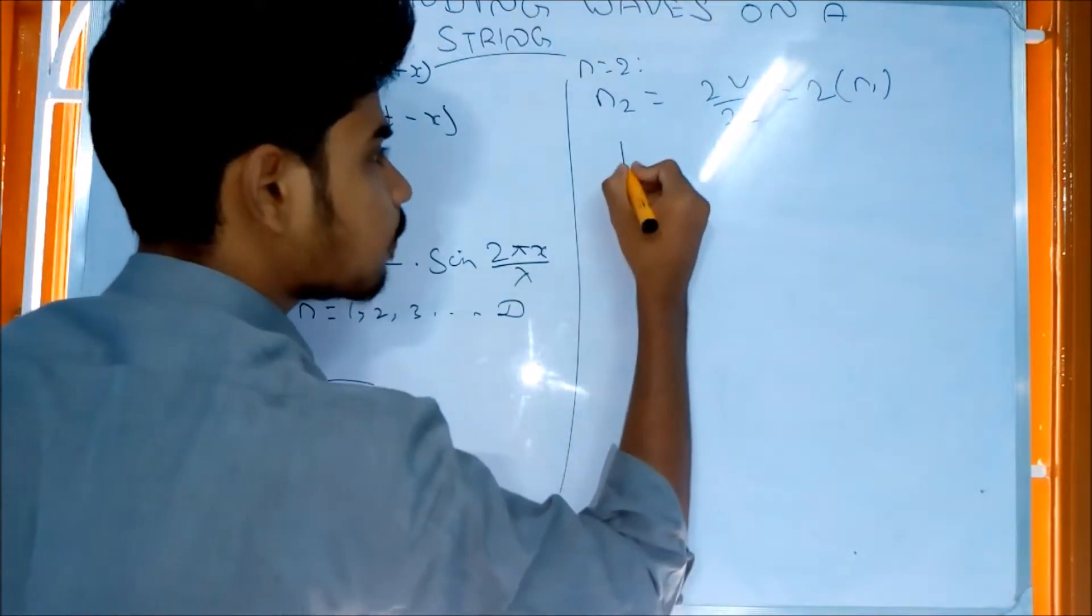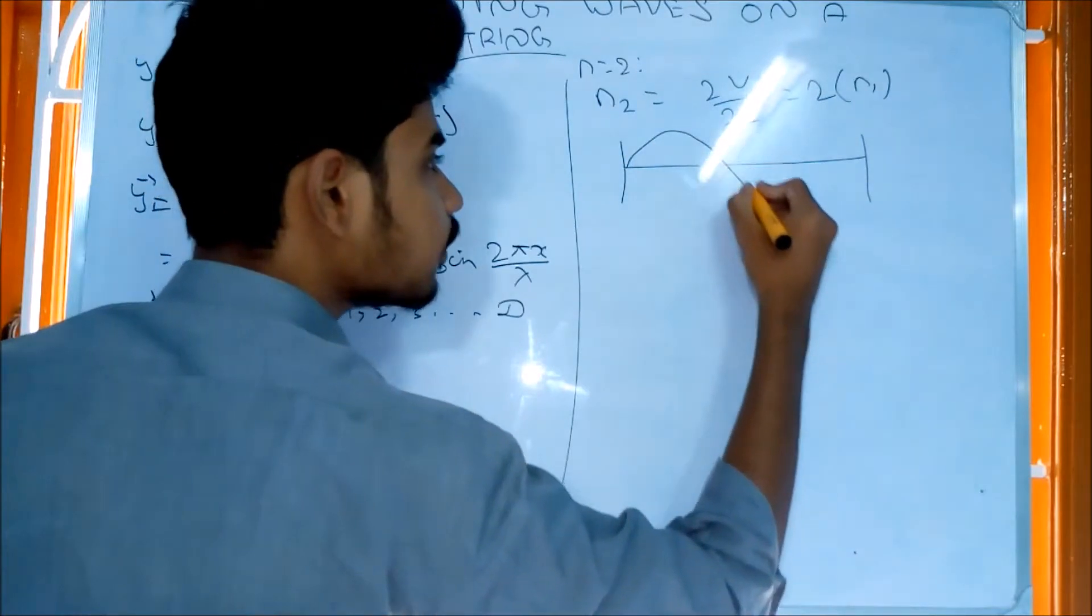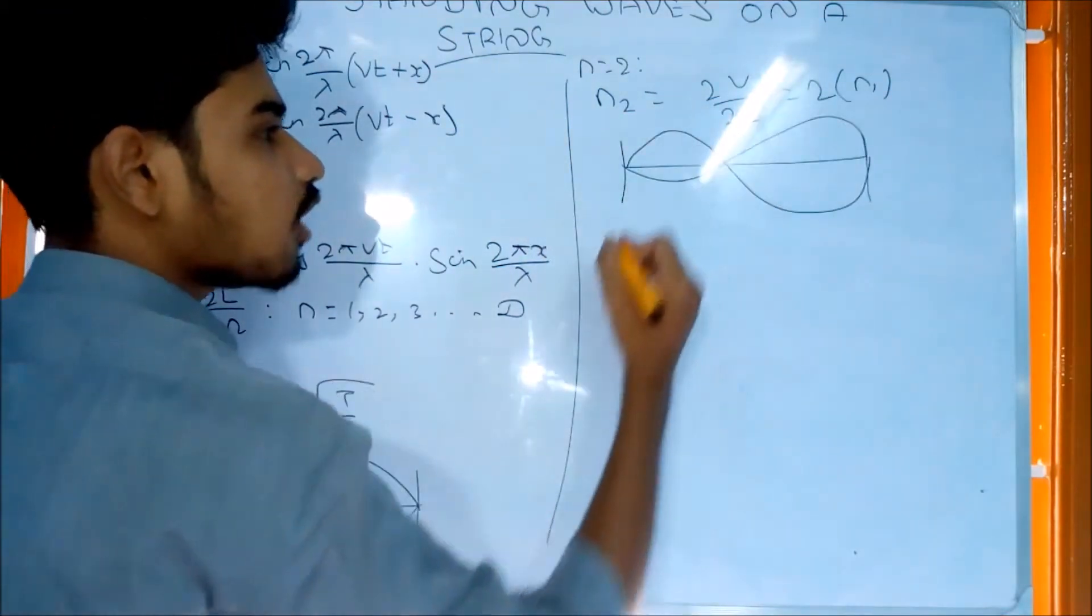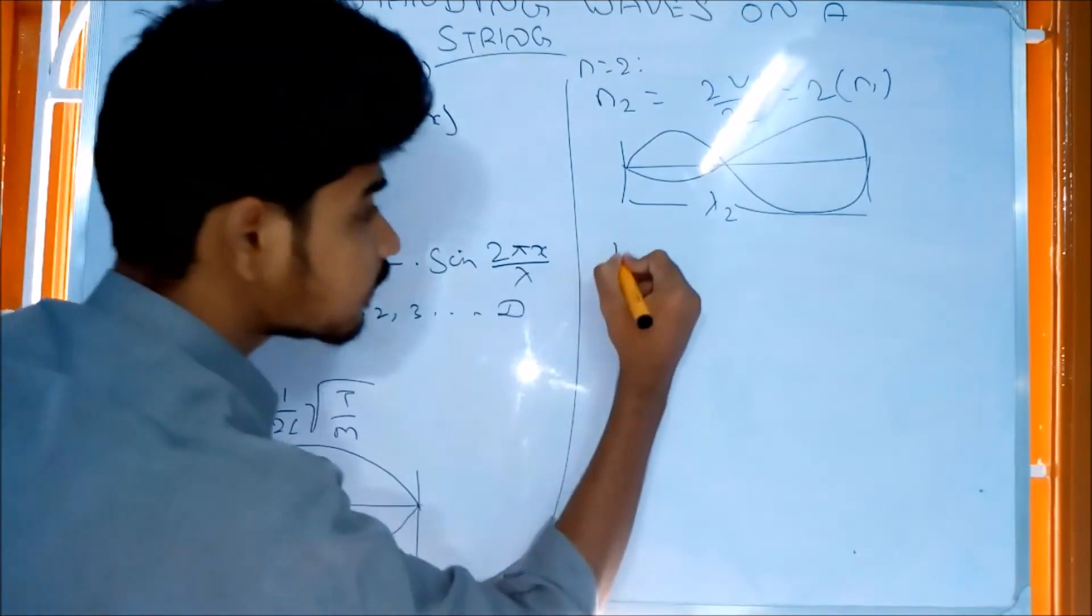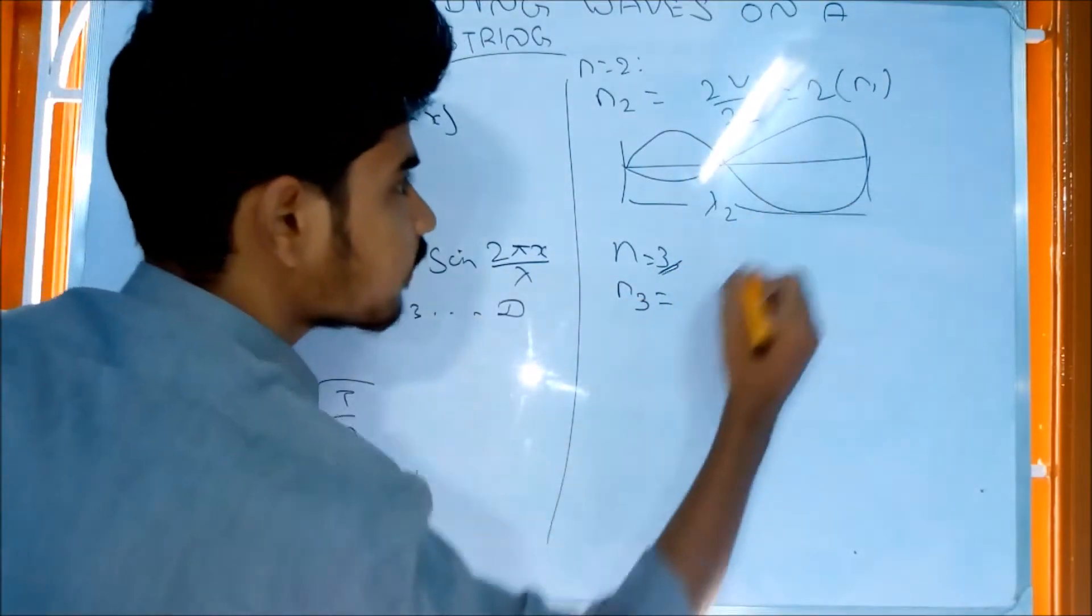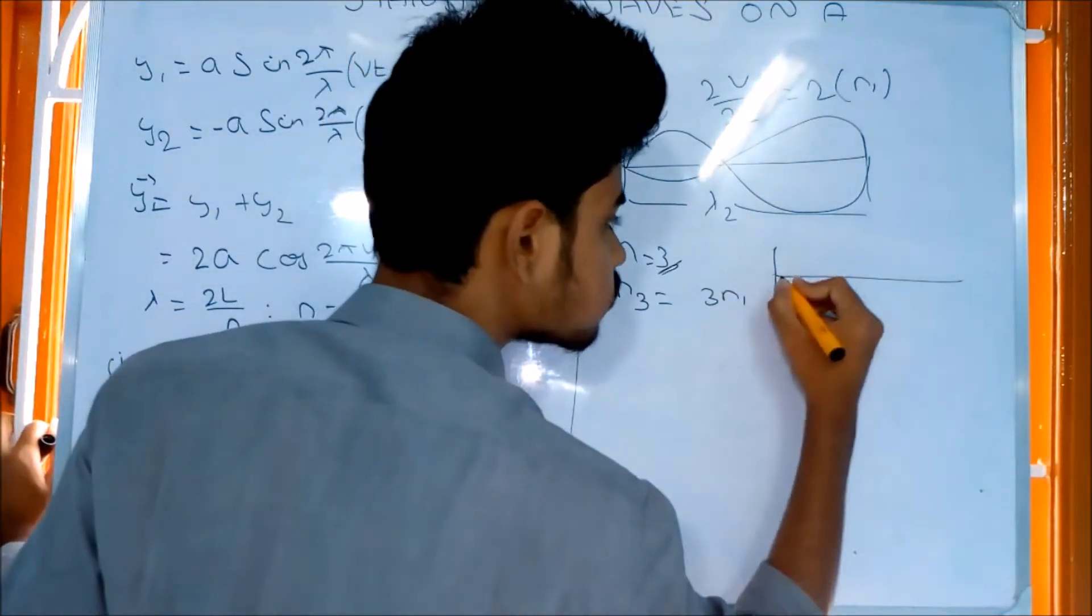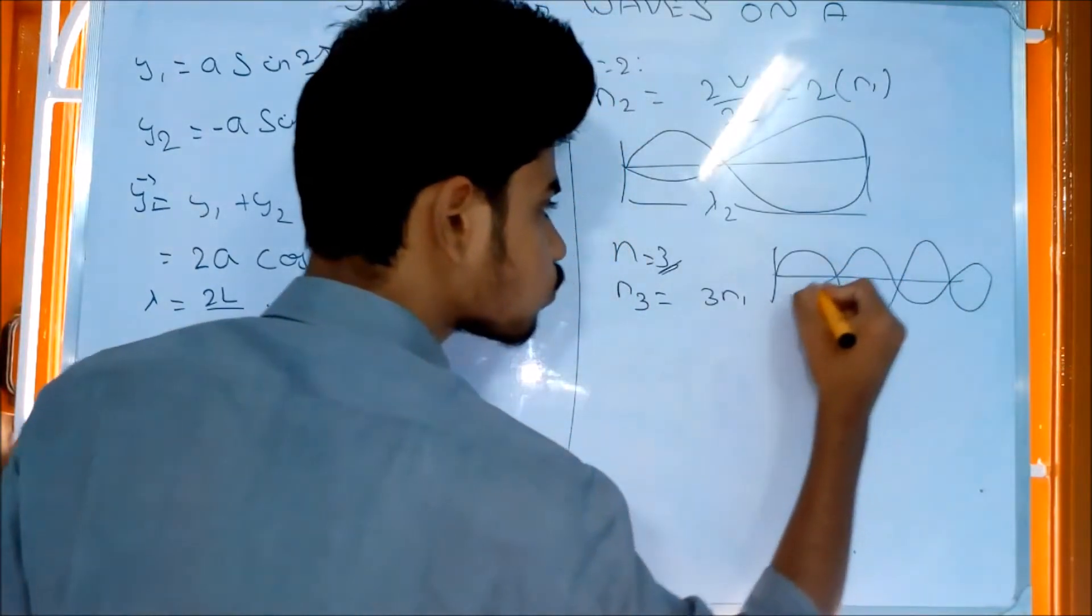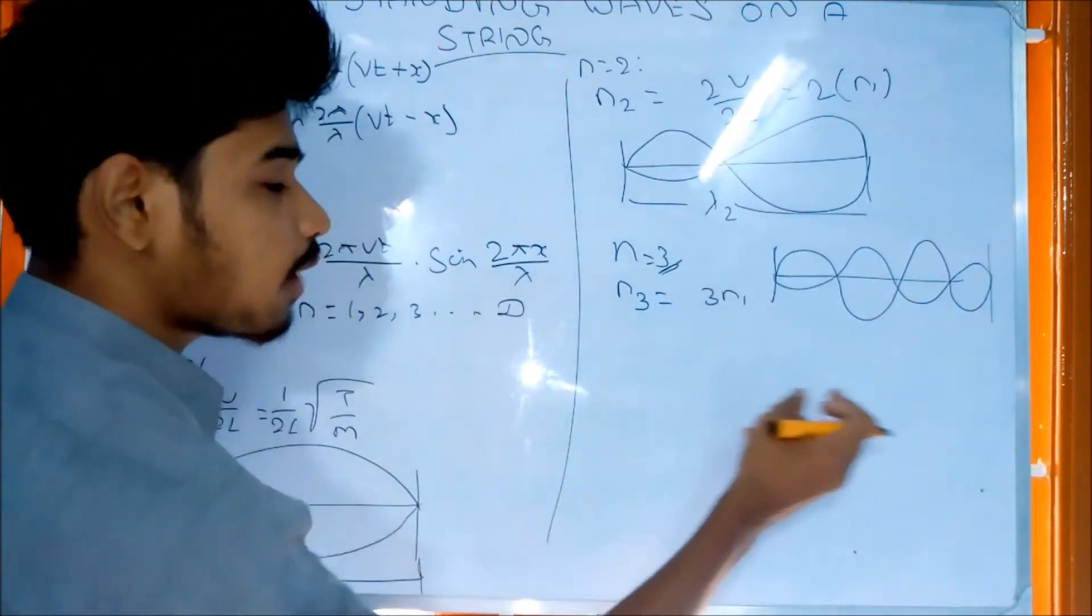For the third mode, n equals 3, giving n3 equals 3v/2L. You can see the pattern with nodes at positions 1, 2, 3.